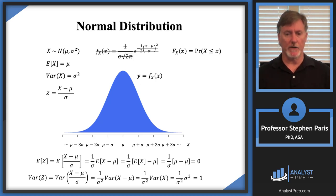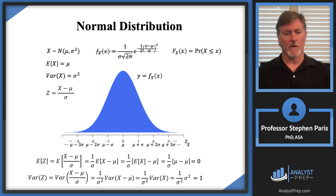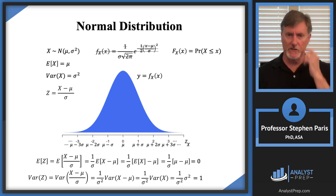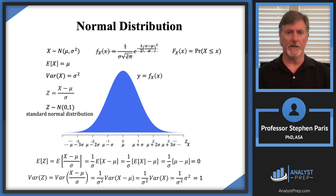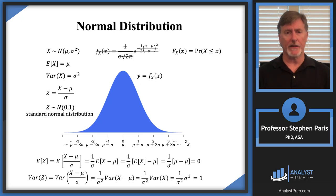This transformed random variable Z has a mean of zero and a variance of one. We can transform the x-axis to a z-axis, where the peak occurs at z = 0, and the marks on each side represent how many standard deviations you are from the mean. This Z is referred to as the standard normal distribution, with notation N(0, 1) — meaning mean zero and variance one.